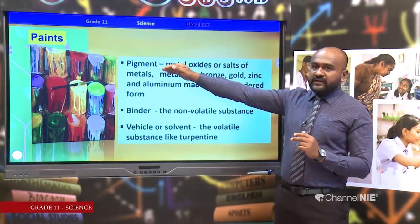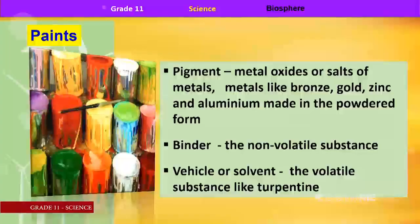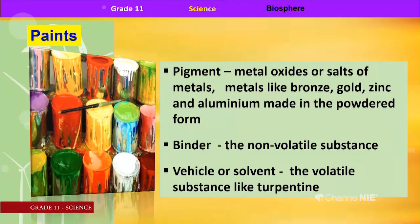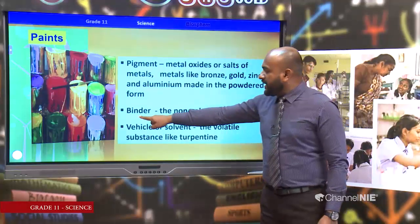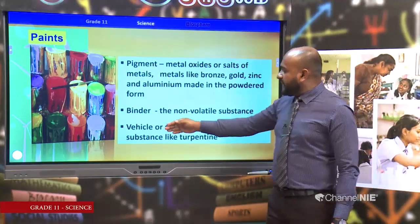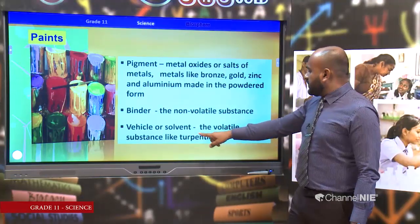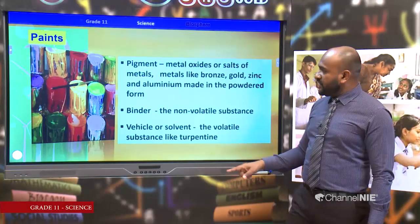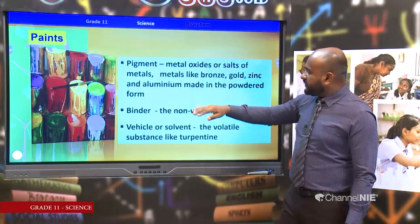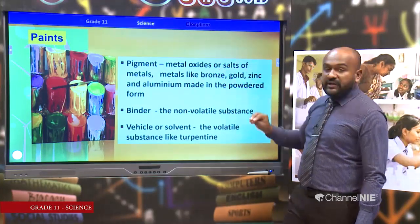Paints are another thing we use in our life situations. A paint has three main components: a pigment (which gives colour to the paint — metal oxides or salts of metals like gold, zinc, or aluminium can be used); a binder, also called the fixative, which is a non-volatile substance that forms the membrane when paint is applied on a surface; and a vehicle or solvent, which is the liquid that dissolves the pigment and binder — volatile substances like turpentine can be used. These components involve different chemicals that can be harmful.